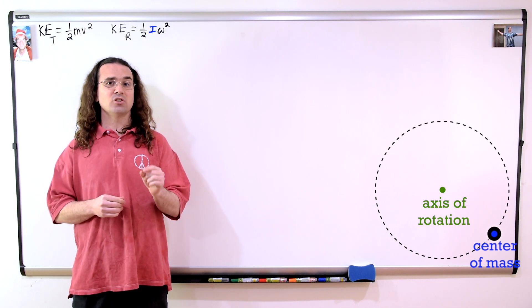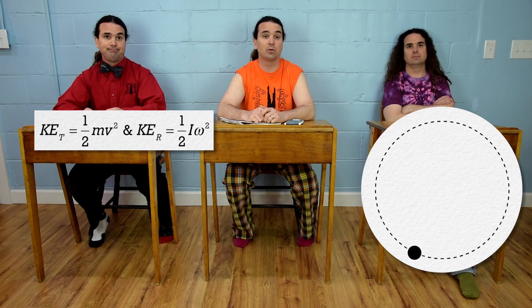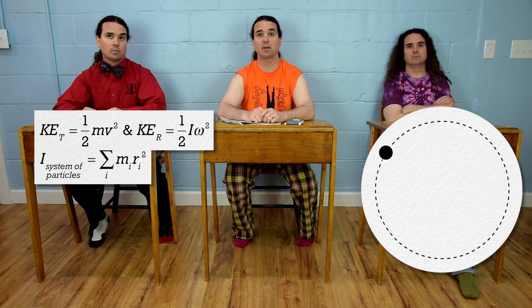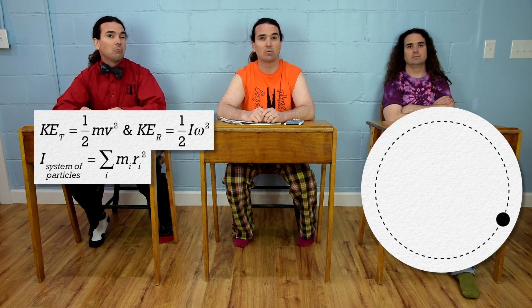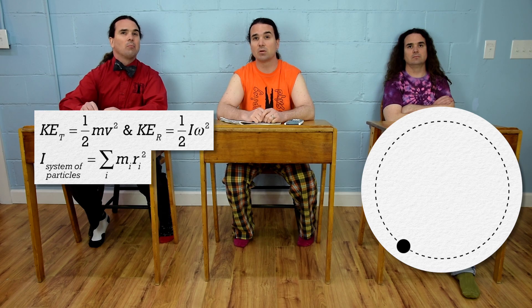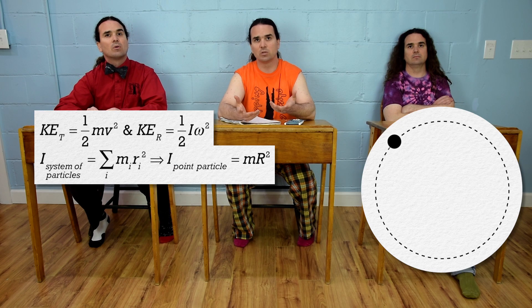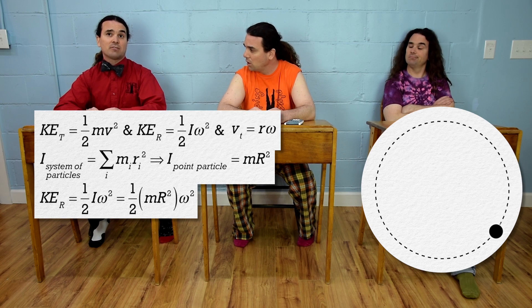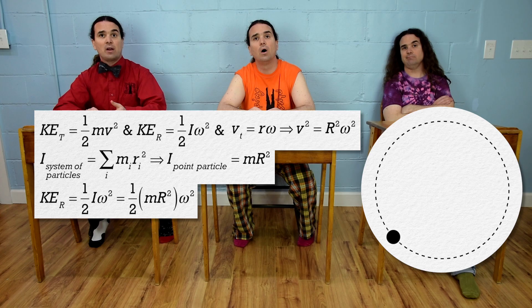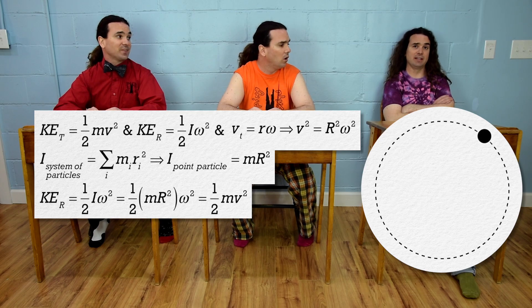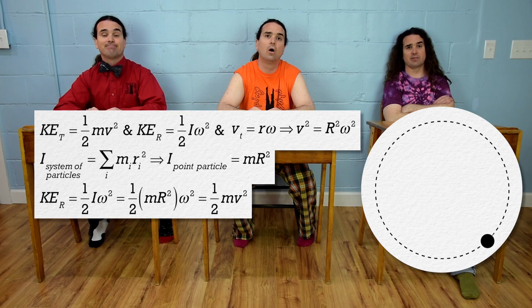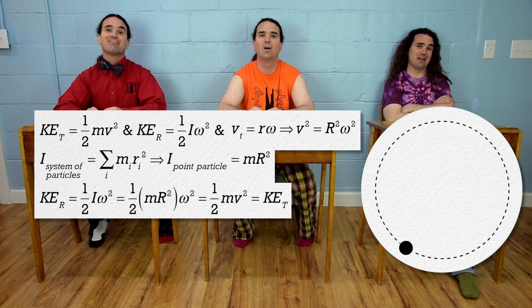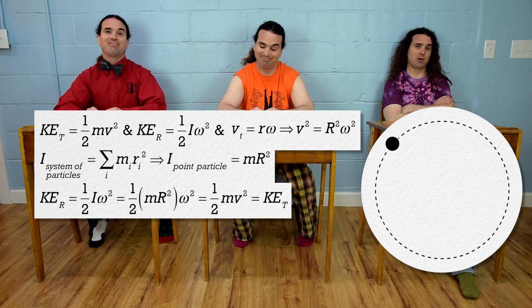Bobby, what is the equation for rotational inertia of a system of particles? The rotational inertia of a system of particles equals the sum of the expression mass times the square of r — the distance from the axis of rotation to the center of mass of the particle — with one expression for each particle. That means the rotational inertia of a single point particle equals mass times r squared, which we can substitute back into the rotational kinetic energy equation. And the tangential velocity equals radius times angular velocity, so velocity squared equals radius squared times angular velocity squared. We can substitute linear velocity squared in for radius squared times angular velocity squared. That means the two kinetic energy equations are equal.